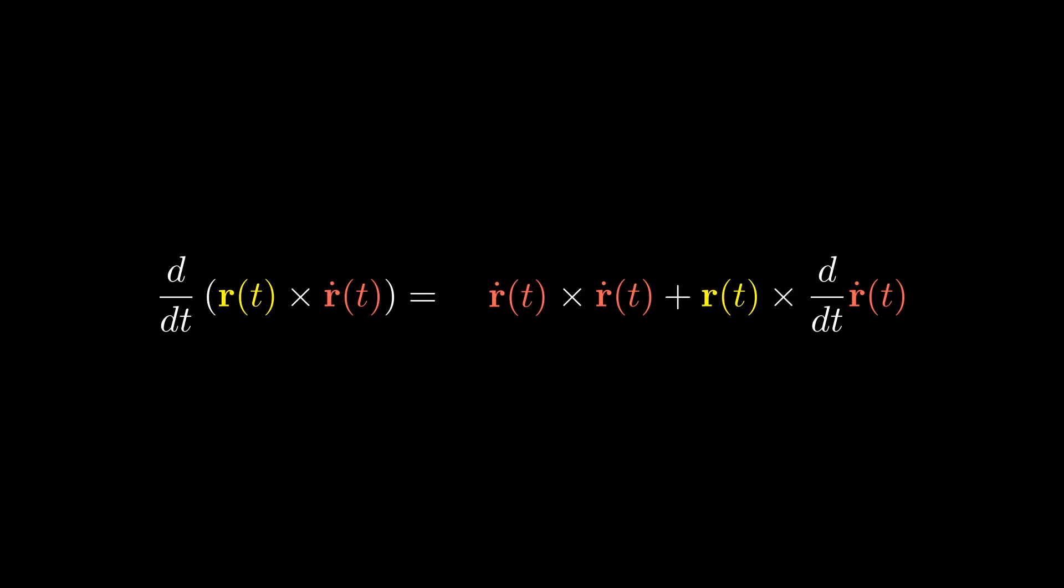Now, the derivative of r is r dot, and the derivative of r dot is r double dot. r dot's parallel to r dot, that's zero, and r and r double dot are parallel. Thus, we get that this computation yields zero.